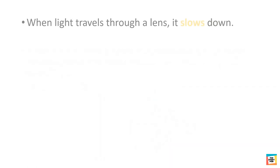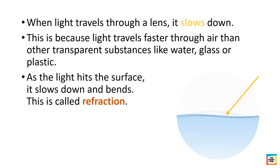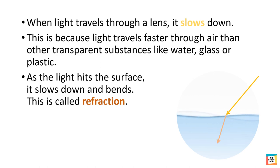When light travels through a lens, it slows down. This is because light travels faster through air than other transparent substances like water, glass, or plastic. As the light hits the surface, it slows down and bends. This is called refraction.